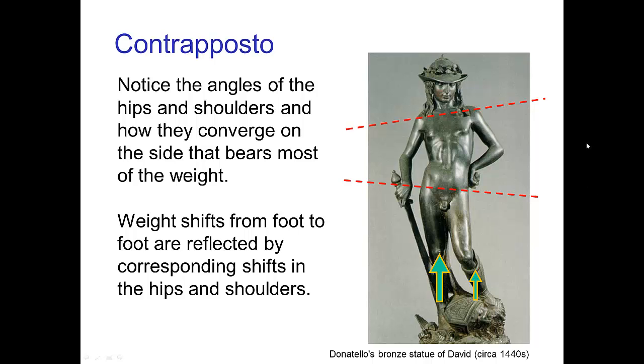There's often a very direct relationship between the weight shift from leg to leg and the resulting pose. The classic example is the contrapposto pose. We see the angles of the hips and shoulders, and in the contrapposto pose, the weight shift is such that the weight bearing side, the hips go up on that side and the shoulders go down on that side. The side that's carrying less weight, the hip tends to go down and the shoulders tend to rise.